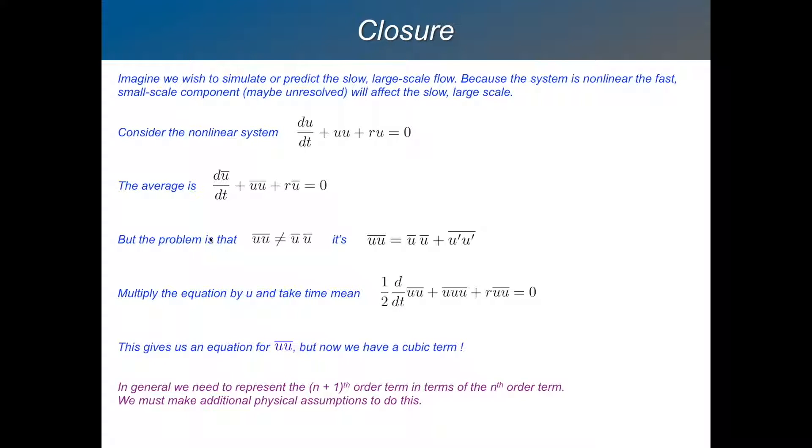Trouble is, if we want to solve that equation for u bar, we don't know this term, we don't know what u times u bar is. Because it's not necessarily just u bar times u bar. That's the problem, because there's this transient part. So u, the average, or the bar of u times u is equal to u bar times u bar plus u dash u dash the bar of that. So that's the term that we need to get a handle on.